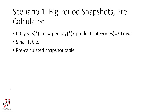Let me give a couple of example scenarios. In one scenario, you want really broad period snapshots — for example, yearly snapshots. You're not interested in daily or monthly data, and you only need product category level. That would be 10 years × 7 product categories = 70 rows. Adding a 70-row table to your model, you probably won't notice any performance difference at all. This is a great case for a pre-calculated snapshot table.